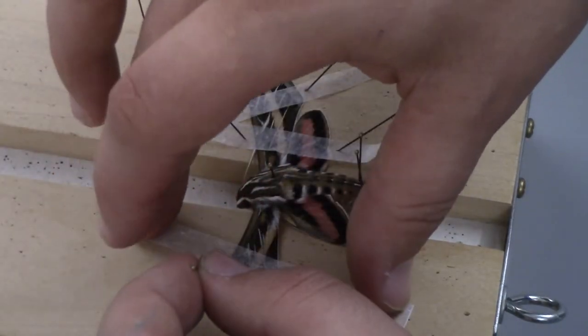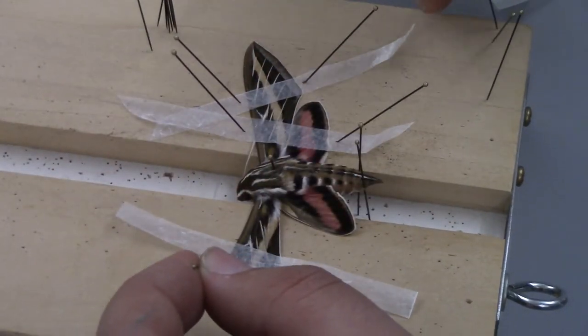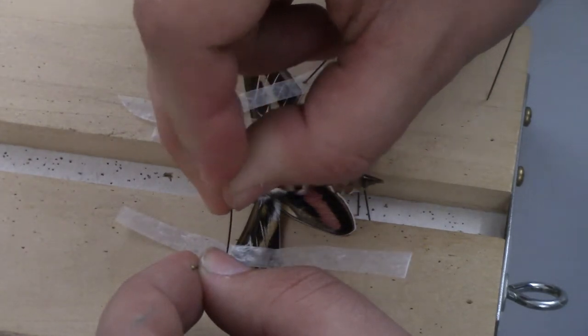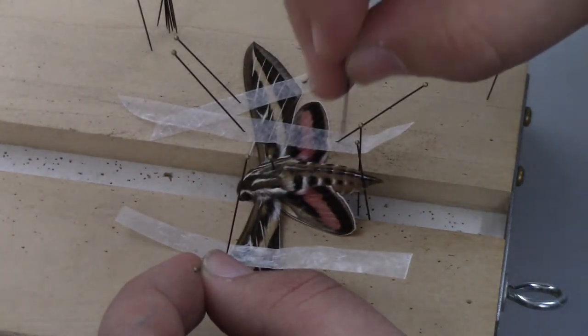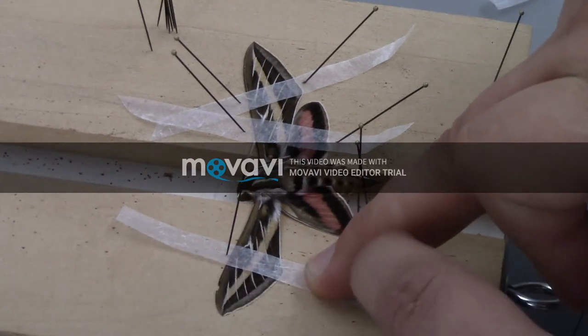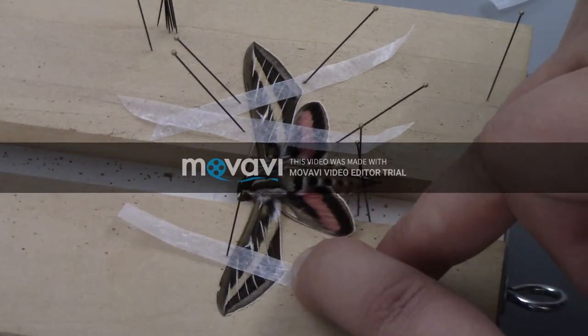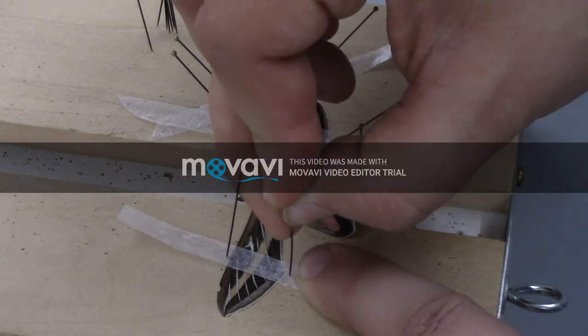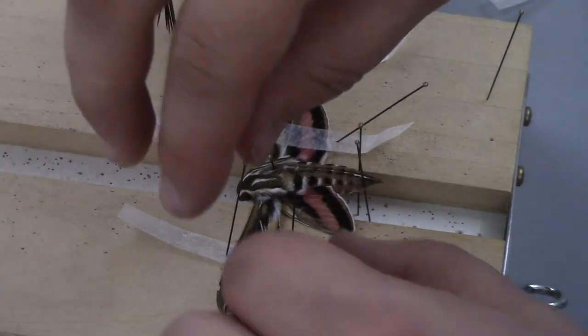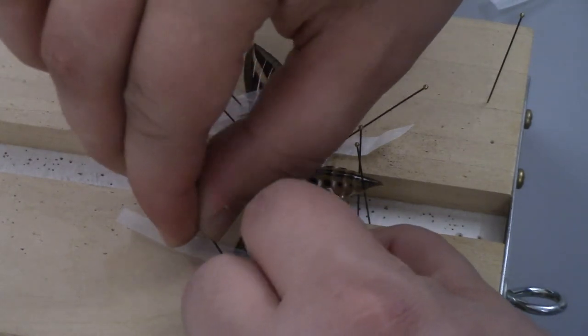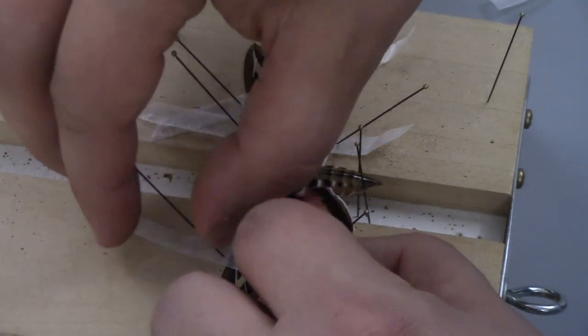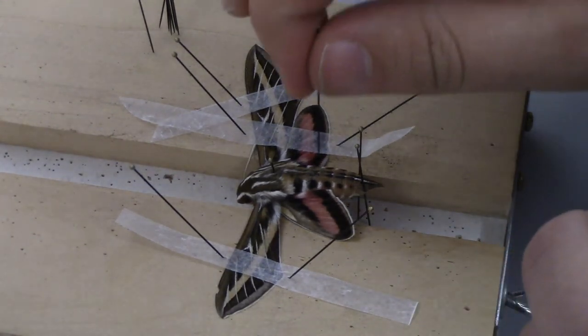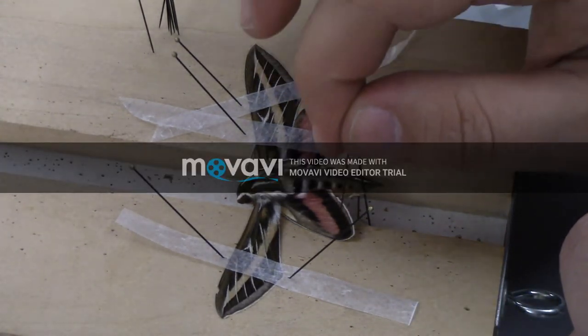Use wax paper to hold down the wings. Use your pins to hold down the wax paper. Simply put them in and spread them apart to tighten the wax paper. Now you're one step closer to pinning your lepidoptera.